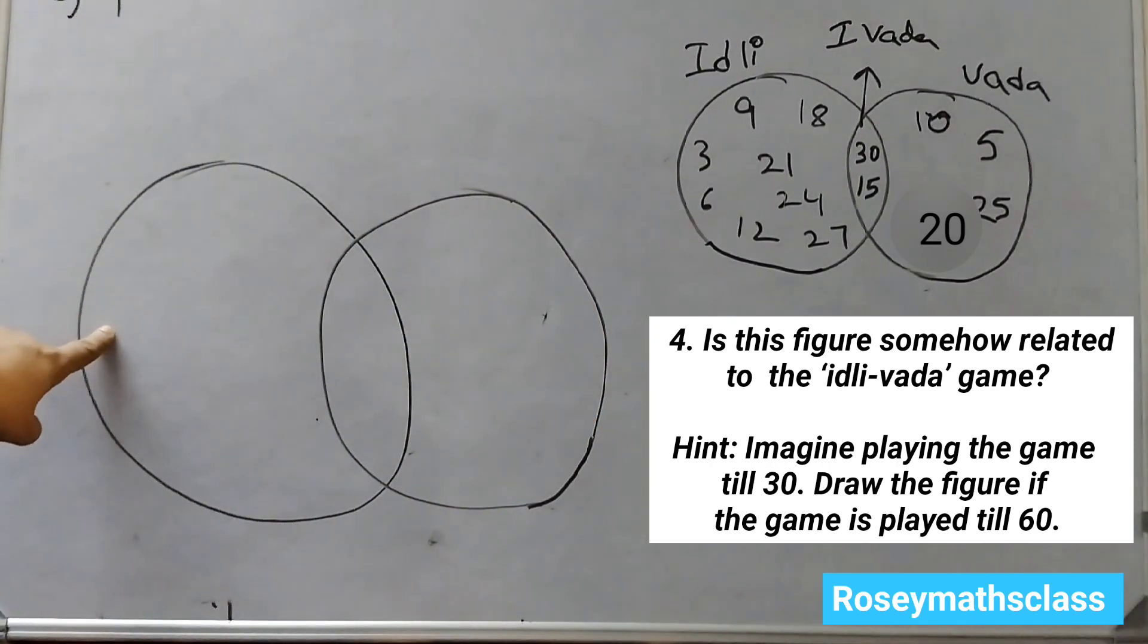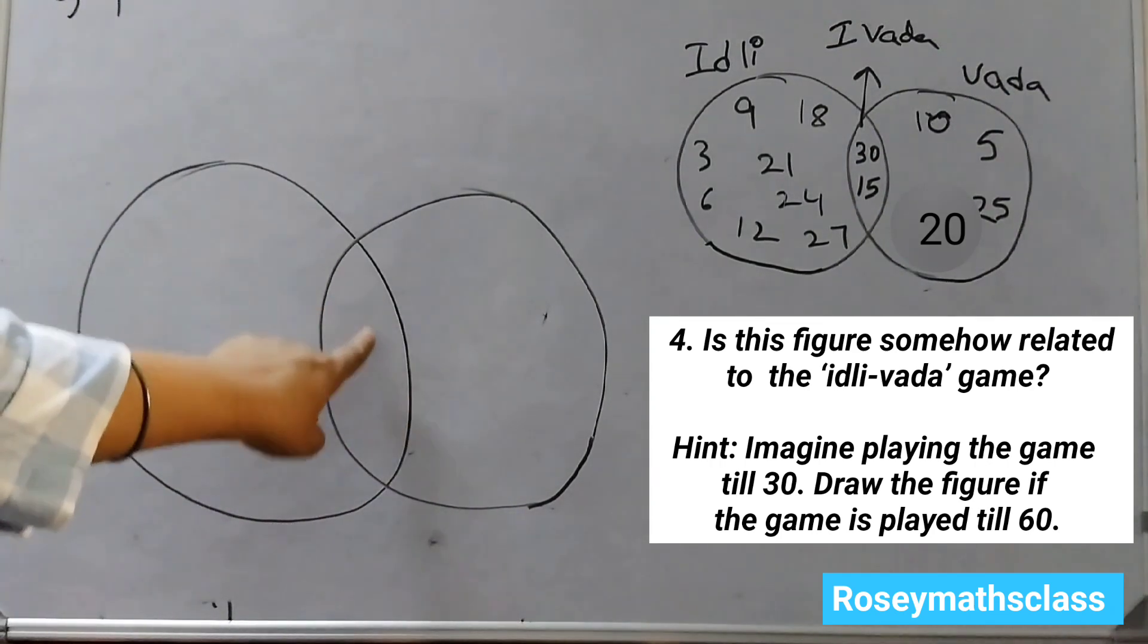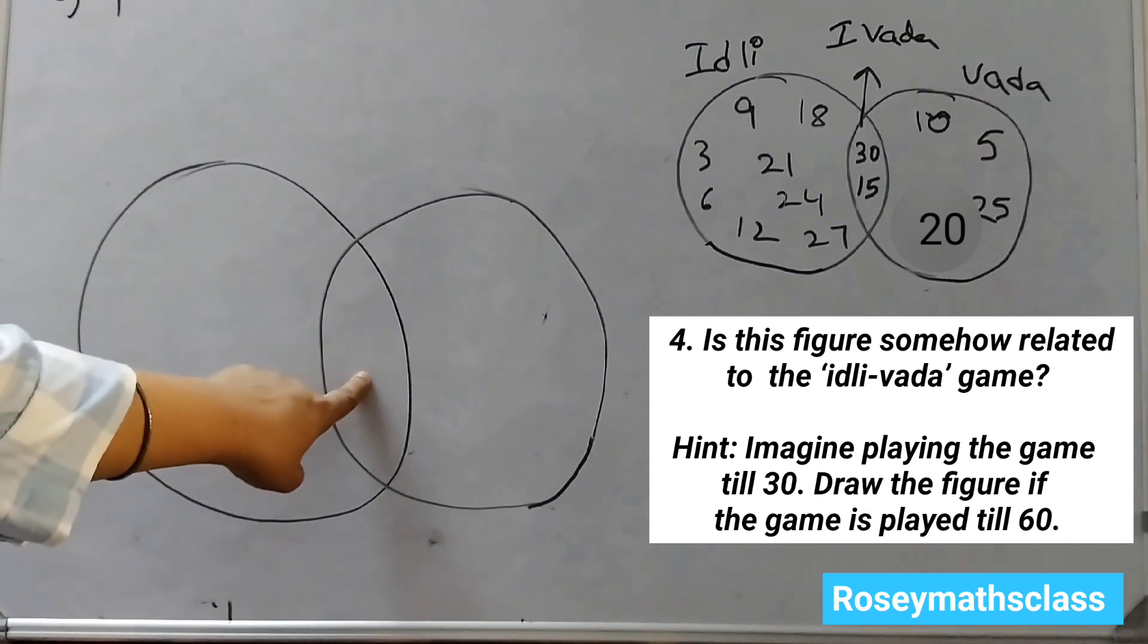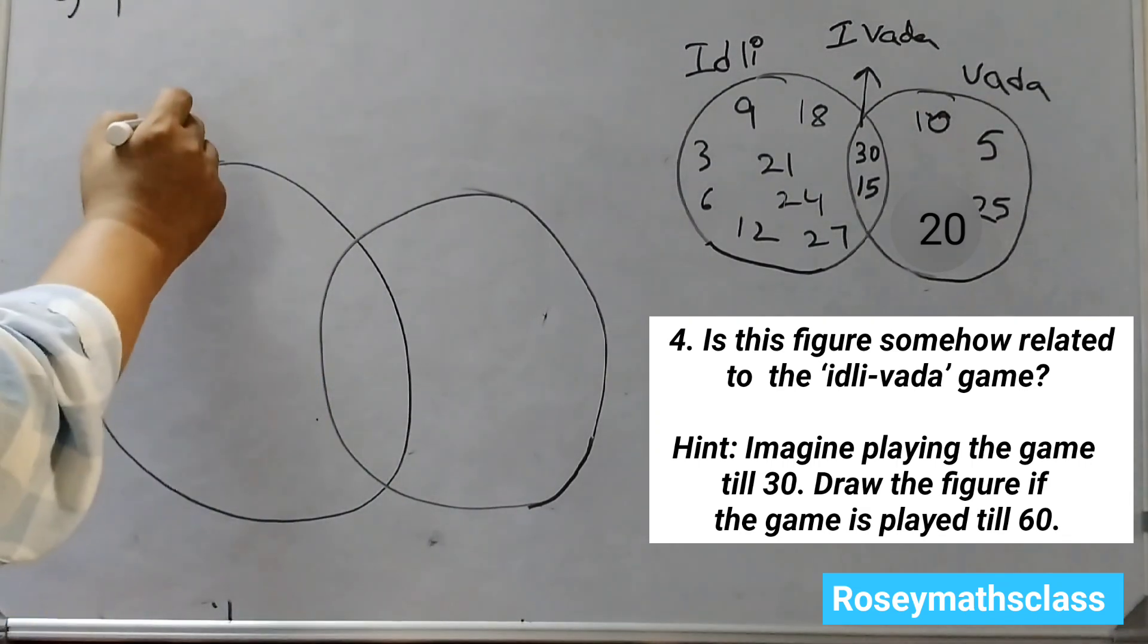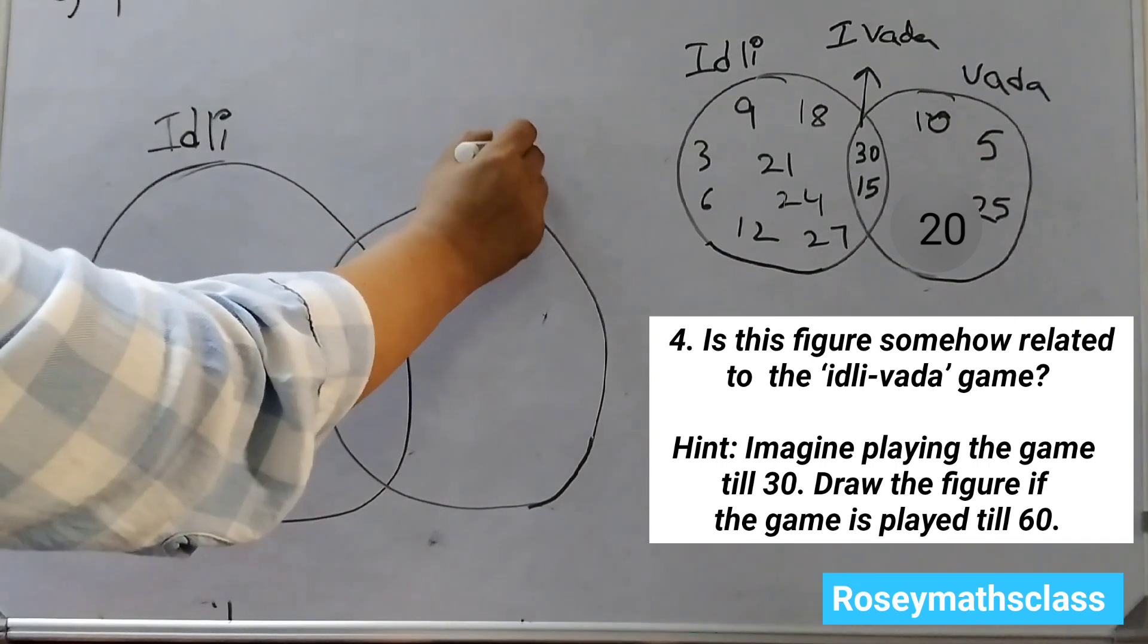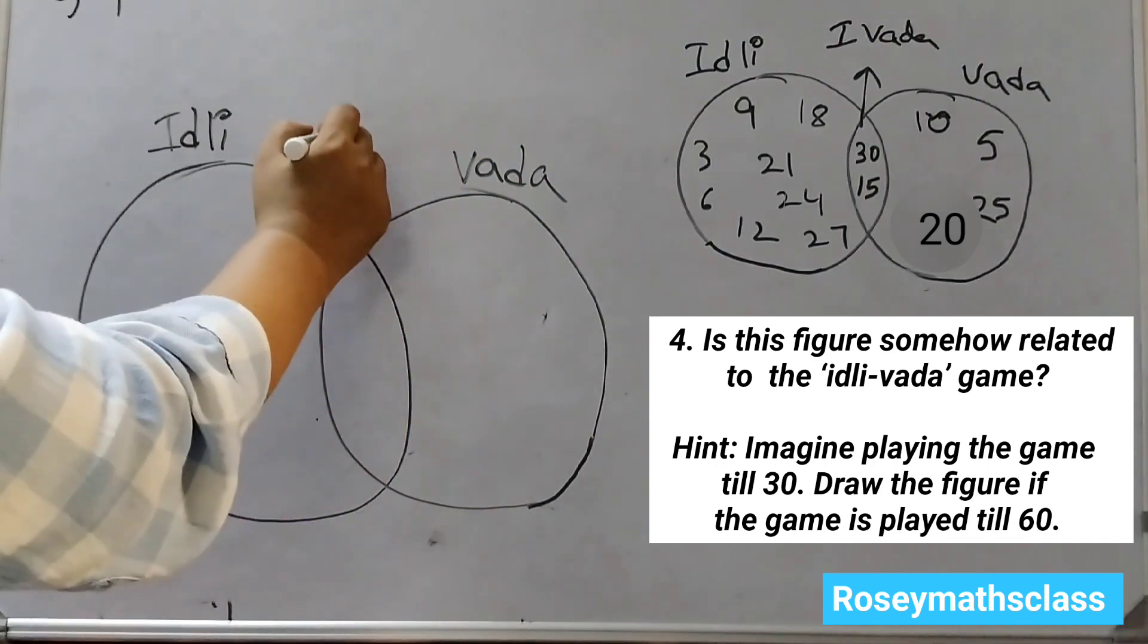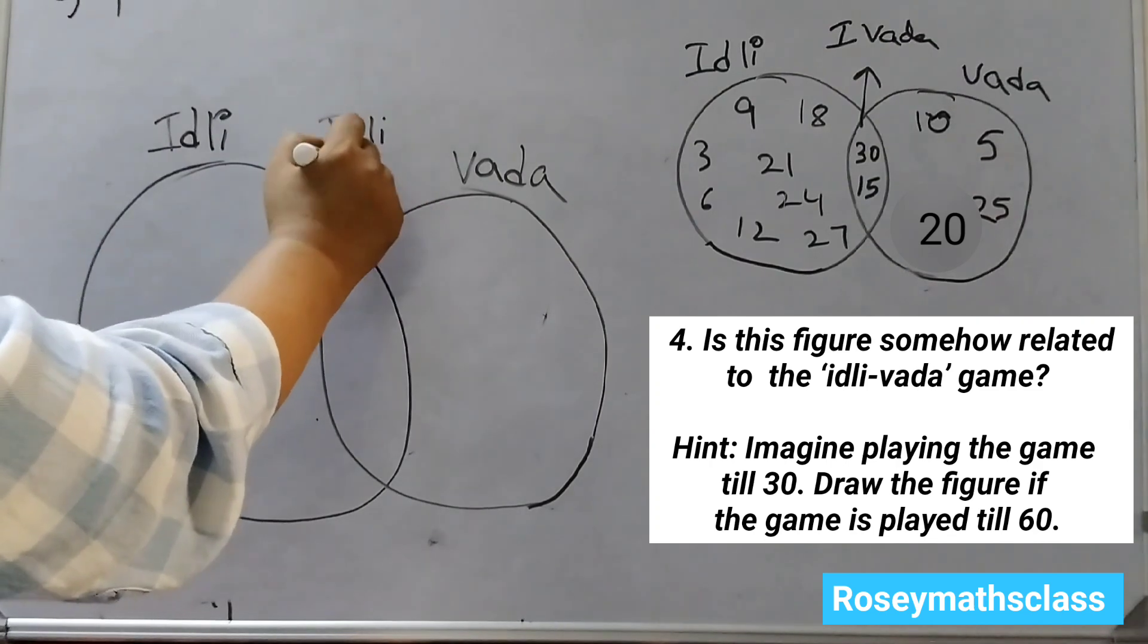First circle, you write all the multiples of 3. Second circle, you write all the multiples of 5, and here the common multiples of 3 and 5. So this is for Idli, this is for Vada, and the common multiples all here. This is for Idli Vada.